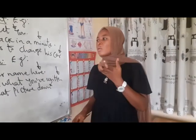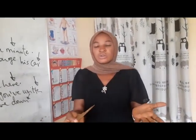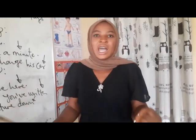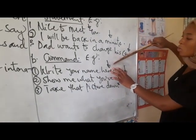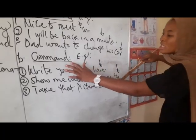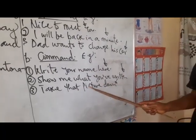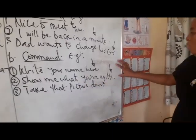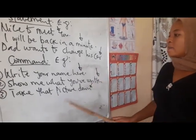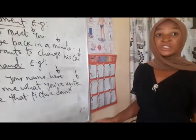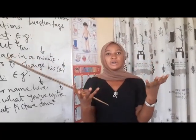Now, commands. Look at the way my voice goes: 'Write your name here.' I am issuing a command to someone. With a command, you want the person to act quickly. 'Write your name here' — the arrow is facing down. Number two: 'Show me what you've written' — also a command, arrow facing down. Number three: 'Take that picture down.' Sometimes when you give a command, the expression also shows in your face.